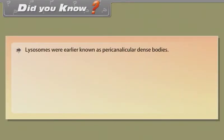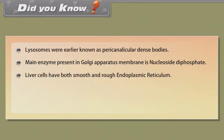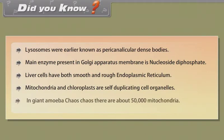Did you know? Lysosomes were earlier known as pericanalicular dense bodies. The main enzyme present in Golgi apparatus membrane is nucleoside diphosphatase. Liver cells have both smooth and rough endoplasmic reticulum. Mitochondria and chloroplasts are self-duplicating cell organelles. In the giant amoeba Chaos chaos, there are about 50,000 mitochondria.